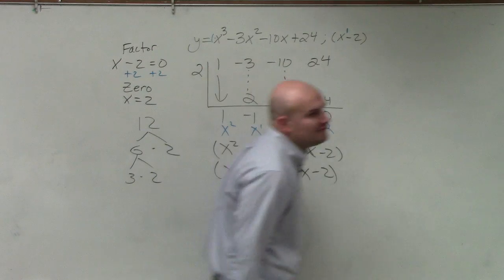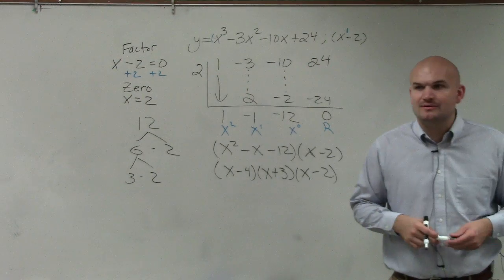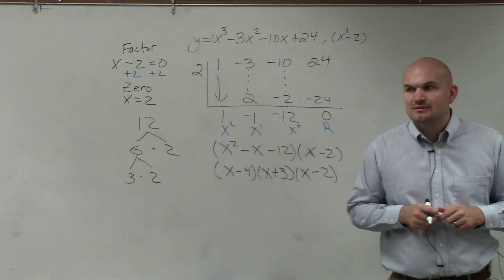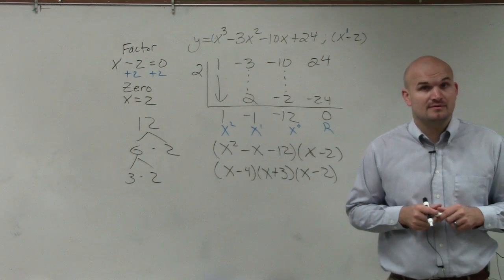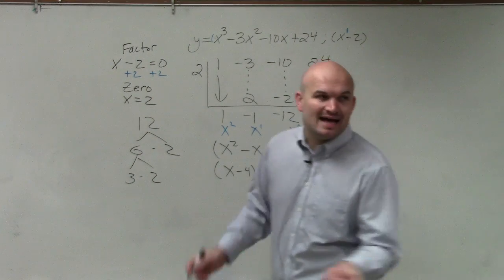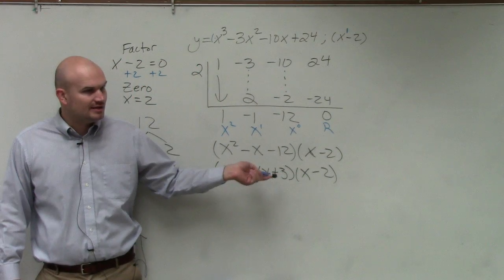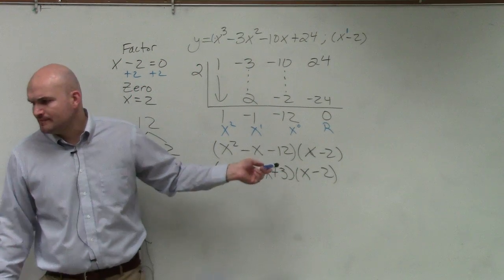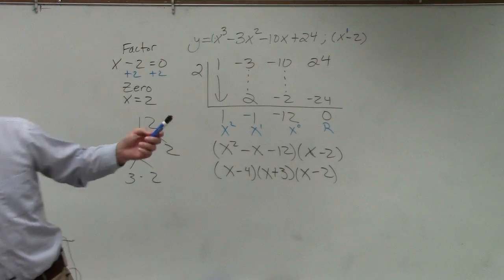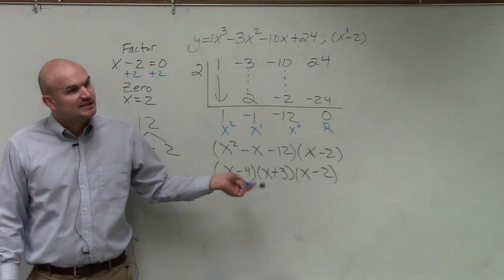Now, is there any further factoring that I can do? Is there any further factoring I can do? No. So guess what? That is what your answer should look like. That is your answer factored completely. So from what, 20, 21 through 24, that's what you're doing for each of these. Now, I'm going to go a little step above, just because.